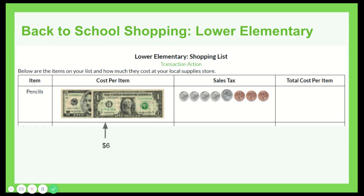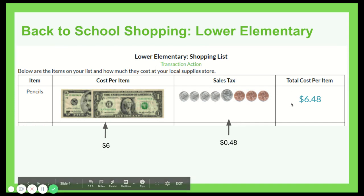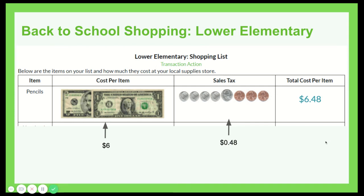In this case, we have $6 — a $5 bill plus a $1 bill. So the package of pencils costs $6. The sales tax is shown in coins: four dimes — 10 plus 10 plus 10 plus 10 equaling 40 — plus a nickel equaling 45, then three more cents: 46, 47, 48. So that's 48 cents in sales tax. The total cost of this pack of pencils is $6.48, because we took the cost and added the sales tax to get the total. Continue with this pattern on your lower elementary shopping list if that's appropriate for you.